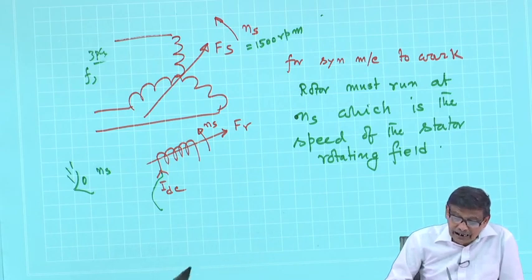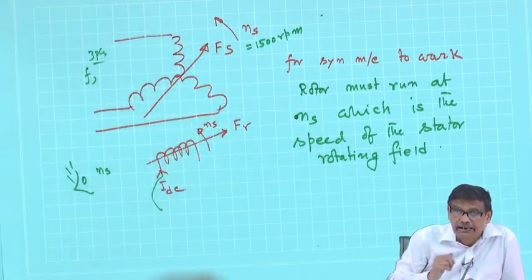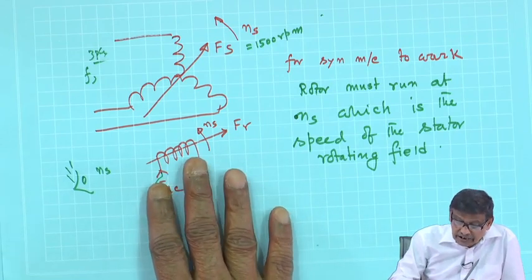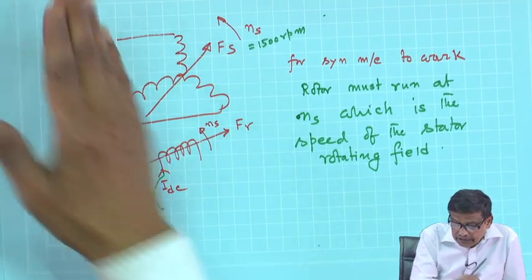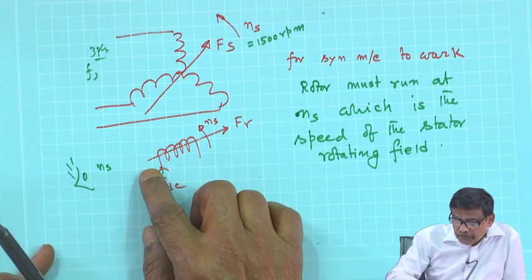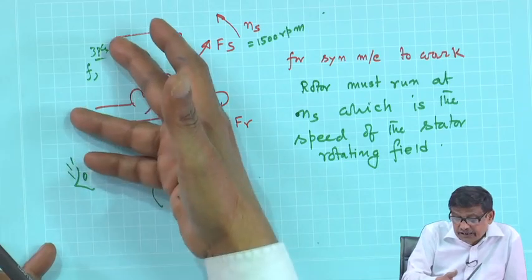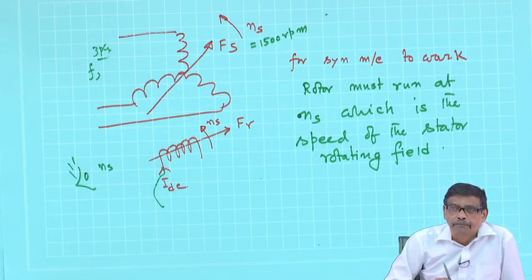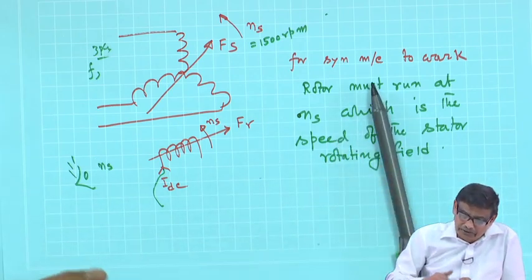Suppose I want to run the synchronous machine as a motor. I give three-phase supply to the stator winding and excite the rotor coil with DC. If the rotor is stationary initially and I energize both, is the machine going to rotate? No — because the rotor field remains stationary while the stator produces a rotating field. Therefore, no torque is produced.